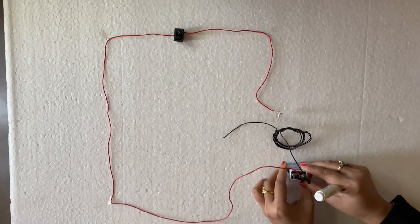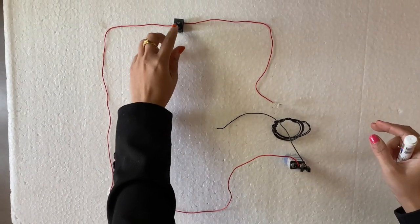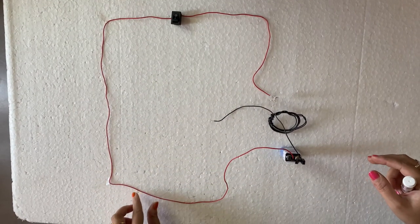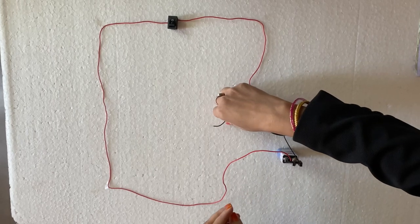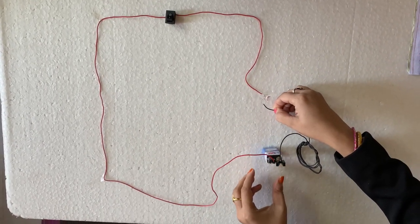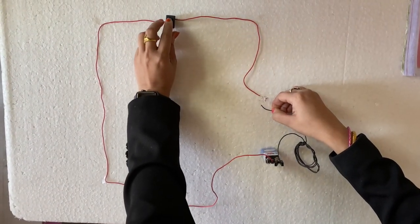So let's start here. Switch is there. When I turn this on, electricity passes through this wire and the bulb will glow. So let's start here. When I am connecting to this, it is not glowing. Why? Because this switch is off, but when I will turn on this switch...